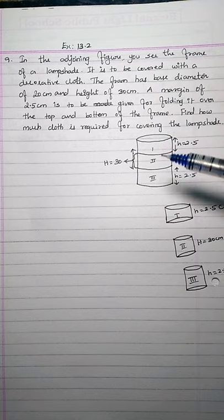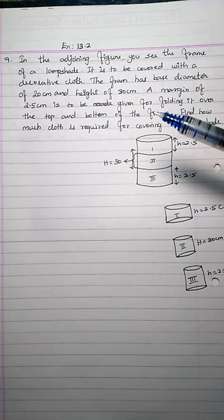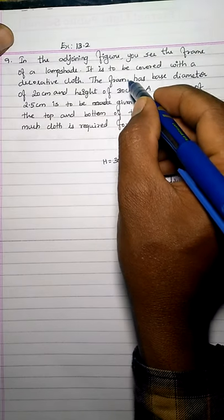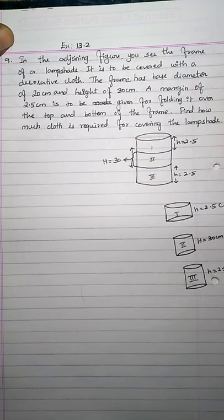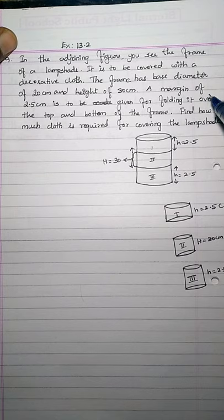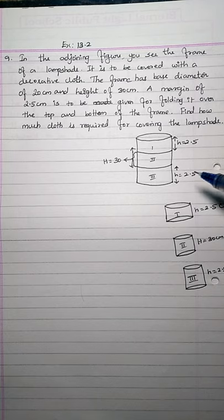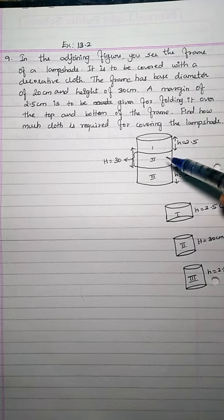This is the frame of your lamp shade. It has three parts and is to be covered with a decorative cloth. The frame has a base diameter of 20 centimeters and a height of 30 centimeters. A margin of 2.5 centimeters is to be given for folding it over the top and bottom of the frame. We have to find out how much cloth is required for covering the lamp shade.